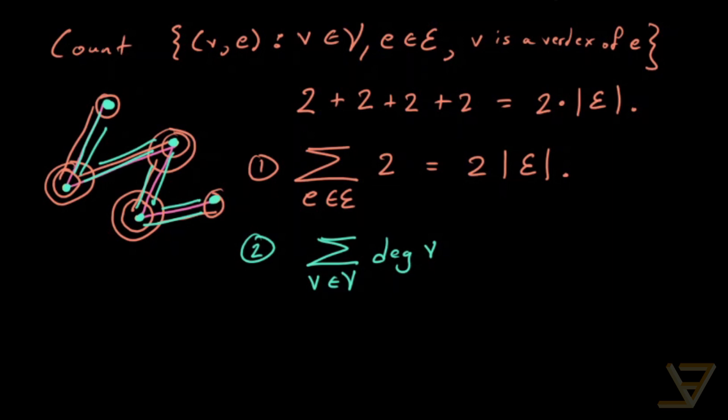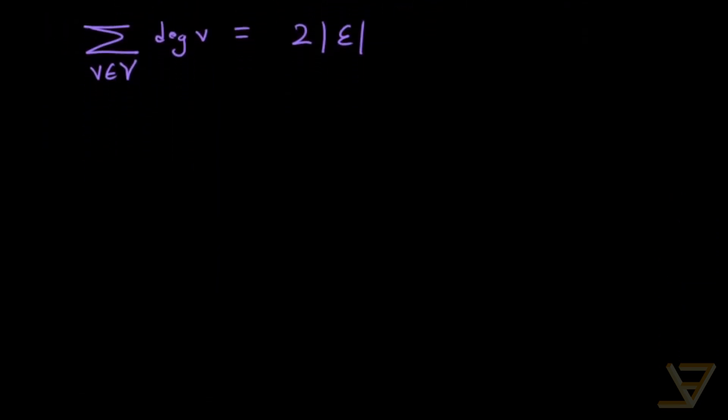So this means that we get the equation: the sum of the degrees of the vertices, of all the vertices, deg(v) is equal to two times the edge set, the cardinality of the edge set. So that's our first result. That's called the first handshaking lemma.